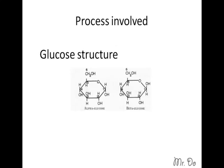Have you noticed the difference between them? On the left, it's called an alpha glucose. Notice the OH, both on the bottom, same side. On the right, it's called a beta glucose. Notice how the OH are on opposite of each other.